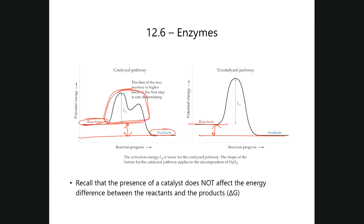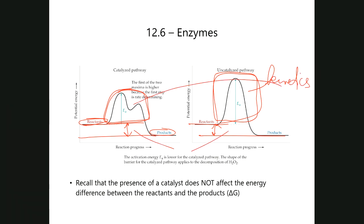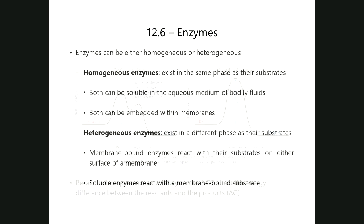Critically, the relative positions of reactants and products — the thermodynamic stability difference — are unchanged by the enzyme. The enzyme only affects the top part of the energy diagram (kinetics), not the bottom part (thermodynamics). The relative stability of reactants versus products is an inherent property of the substances themselves, and the enzyme doesn't touch that. It only affects how fast reactants become products.